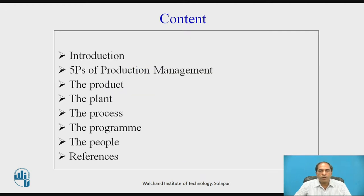We will have a sequence covering the introduction and what are the five P's of production management. In short, the five P's of production management are: product, plant, process, program, and people.